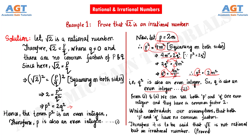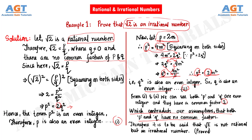Now from equation 1 and equation 2, we can see that both P and Q are even integers, and they both have a common factor which is 2. But this contradicts our assumption that P and Q have no common factors. Since both P and Q have a common factor of 2, we cannot say that root 2 is a rational number because this condition is not satisfied. And since root 2 is not a rational number, we can say that root 2 is an irrational number.